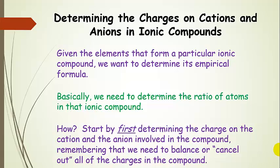We want to learn how to write an empirical formula for an ionic compound given the elements it is formed from. Basically, we're figuring out the ratio of atoms of each element in that ionic compound. We're going to start by determining the charge on the cation and the anion given the element.